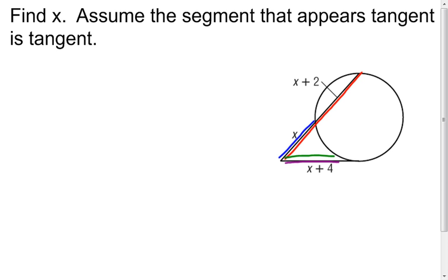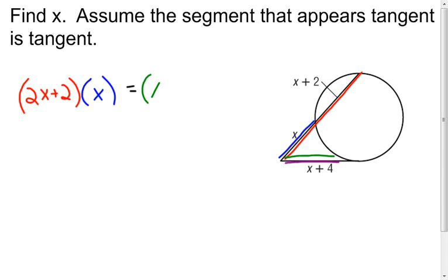Now I'm going to put my equation together. That whole red segment is x, but it also is the x plus 2, so I'm going to have to add those two together. x plus x plus 2 is 2x plus 2 — there's the length of the red. I have to multiply that by the blue, which is x. And that's going to equal the whole tangent segment, which is x plus 4, multiplied by the outside part of the tangent segment, which is the same thing because the whole tangent segment is outside. Now I have an equation to go ahead and solve.